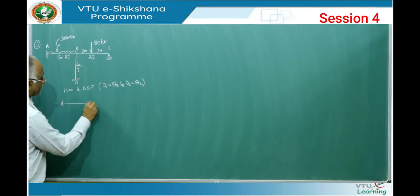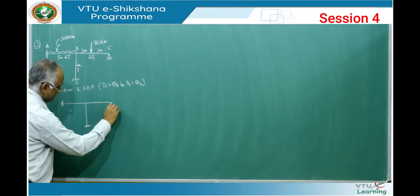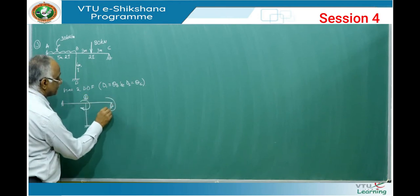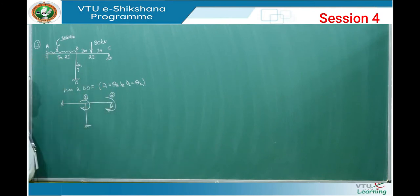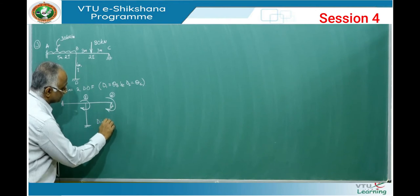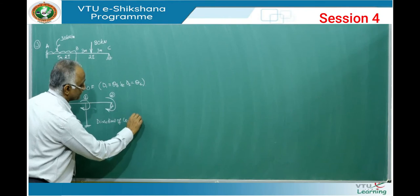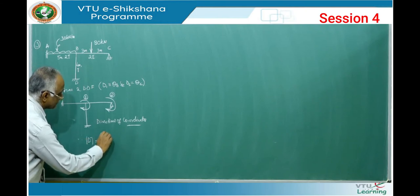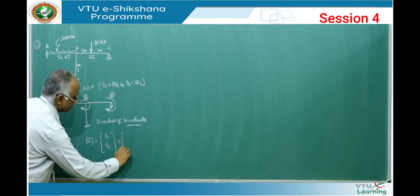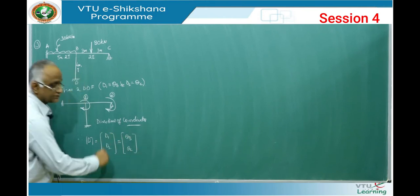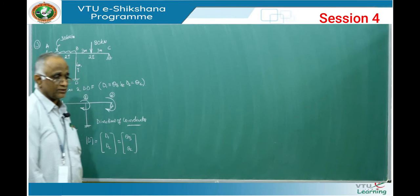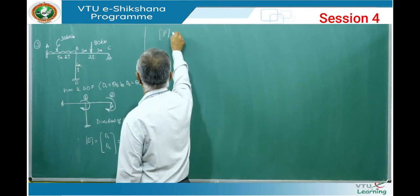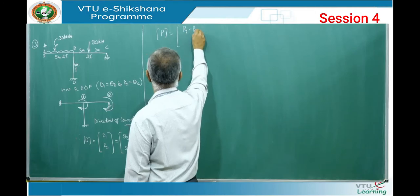With these two degrees of freedom, I can show the directions of the coordinates. Always assume the clockwise direction and represent these coordinates with a circle over the number. So 1 and 2 are the directions of coordinates. Therefore, your displacement matrix is D1 and D2. Coming to the force matrix P, it will be Pi minus PiL.